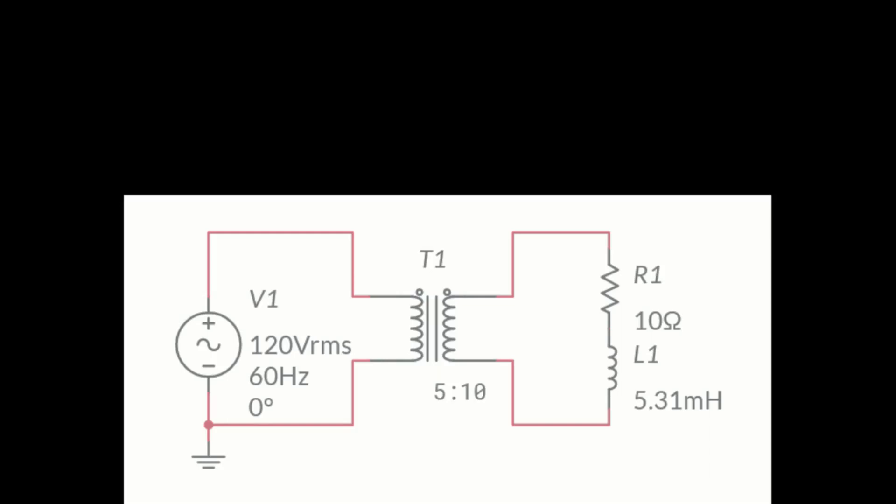For this problem, you're asked to solve for the complex power consumed by the load. We start by calculating the reactance of the inductor. It's a 60 hertz system. When we do that calculation, that works out to an impedance of j2 ohms, which we're going to put down here on the schematic.